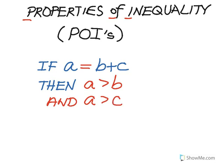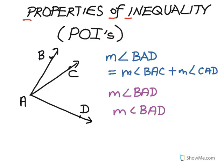The application of that property in a geometric setting is this. Let's say we have a big angle, angle BAD, and by the angle addition postulate it's comprised of two smaller angles: angle BAC plus angle CAD. It should follow logically then that the big angle BAD is greater than either of its parts — so it's greater than the measure of angle BAC, and of course it's greater than the measure of angle CAD.